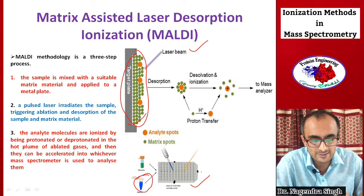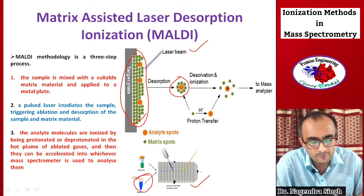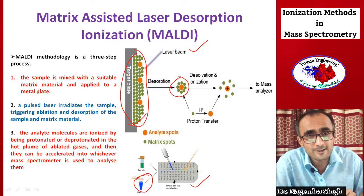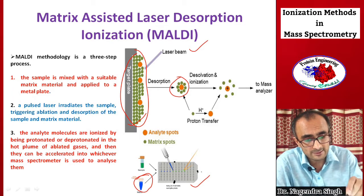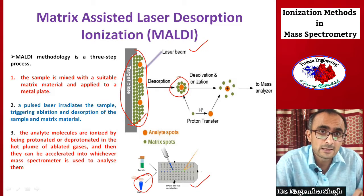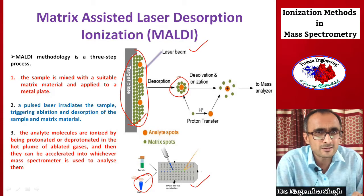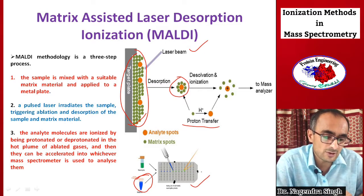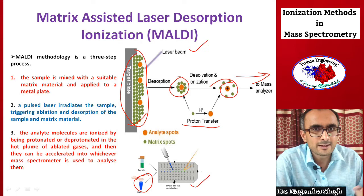When the laser beam strikes the co-crystals of matrix and analyte, desorption occurs — the matrix molecules along with the analyte fly off from the solid surface. The matrix molecules, being aromatic compounds, absorb radiation from the laser beam and become excited. During this desorption process, they transfer charge (a proton) to the analyte, making it positively charged. Both protonation and deprotonation are possible. The positively charged analyte is then further analyzed in the mass analyzer.